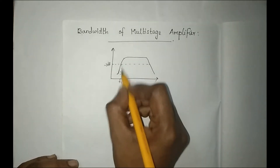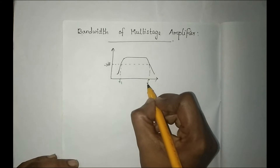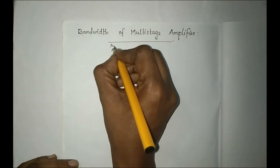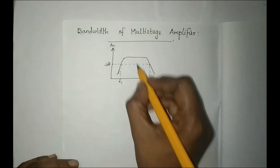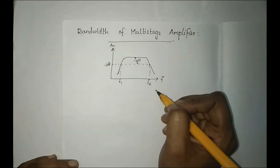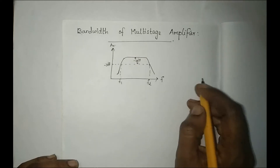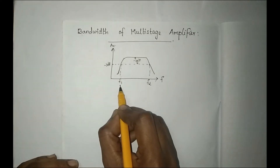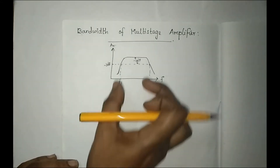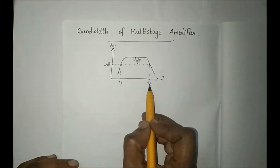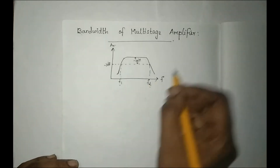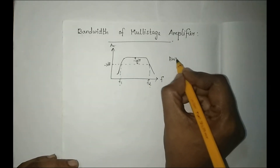This is F1, which is the lower cutoff frequency, and this is F2, the upper cutoff frequency — where the gain drops. So this is the minus 3dB drop, or 1 by root 2 times, which is the cutoff frequency. This one is the lower cutoff frequency and this one is the upper cutoff frequency.